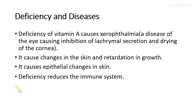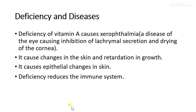Now, what is the deficiency disease of Vitamin A? Deficiency of Vitamin A causes xerophthalmia, a disease of the eye causing inhibition of lacrimal secretions and drying of the cornea. It causes changes in the skin and retardation in growth, as well as epithelial changes in the skin. Deficiency also reduces the immune system. These are the deficiency diseases of Vitamin A.